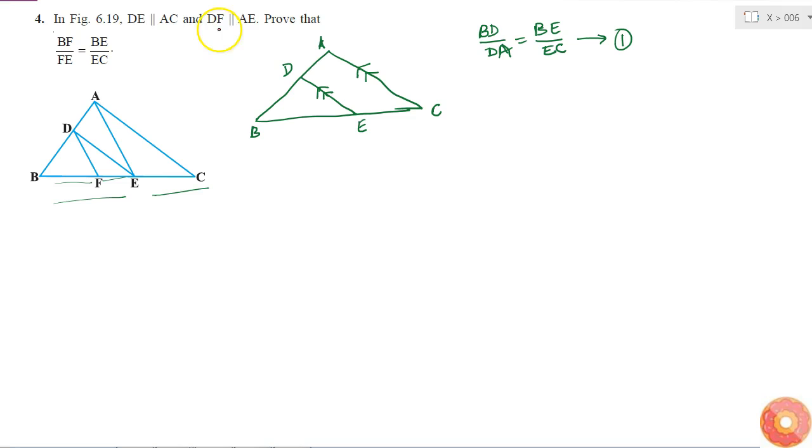After that, what is said? DF is parallel to AE, so this line is parallel to this line. So if I consider triangle ABE separately, A B E, then what am I given? DF, right.